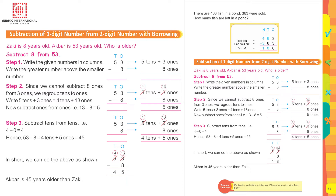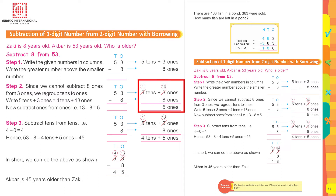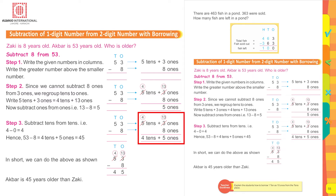53 is 5 tens and 3 ones; 8 is 8 ones with no tens. Since we cannot subtract 8 ones from 3 ones, we regroup: 5 tens and 3 ones equals 4 tens and 13 ones. Now subtract ones from ones: 13 minus 8 equals 5. Then subtract tens from tens: 4 minus 0 is 4.